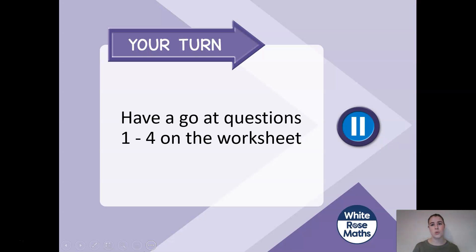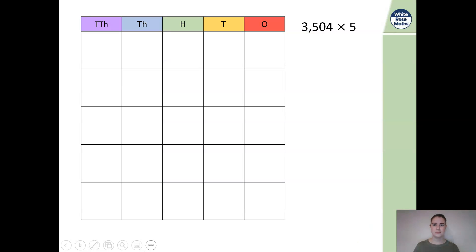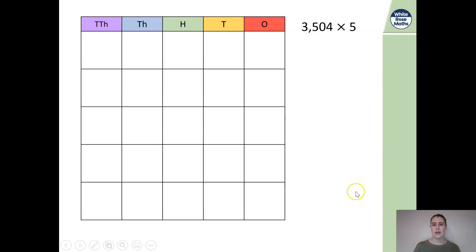Over to you to have a go at doing questions 1 to 4 on your worksheet. Now let's consider this sum: 3,504 multiplied by 5. Here is a 4-digit number, but my place value has 5 columns — let me think about why.